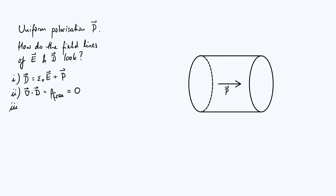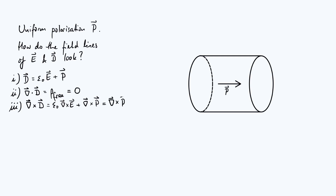Now what about the curl of D? Taking the curl of both sides of equation 1, we find that curl D = ε₀ curl(E) + curl(P). Assuming nothing is time-varying — in particular no time-varying magnetic fields — Maxwell's equations tell us curl E = 0, and therefore curl D equals exactly curl P.